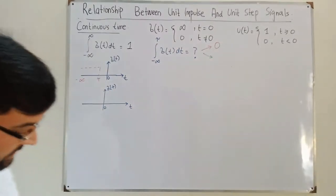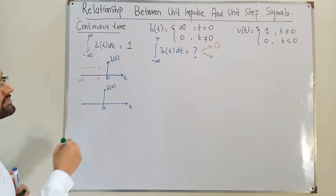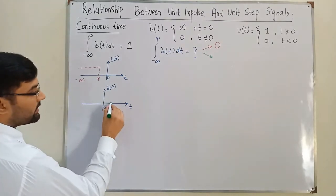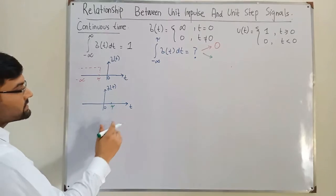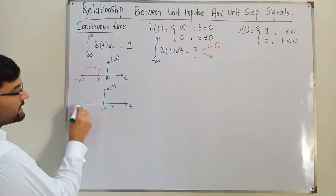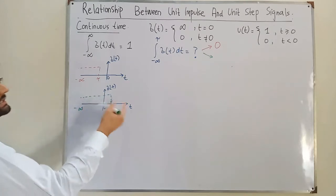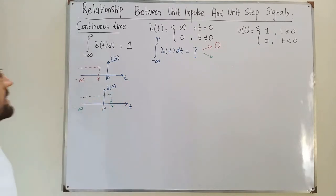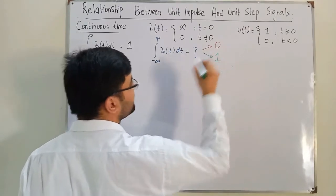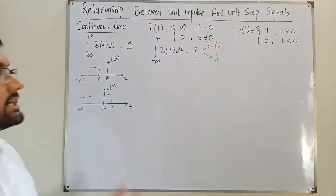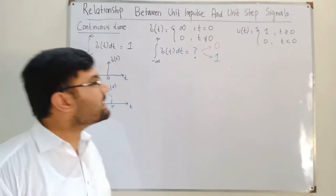Case two: the value of tau is to the right of 0. Integrating from negative infinity to this tau includes the impulse, so you get an answer equal to 1. Notice that this exactly matches the unit step signal.